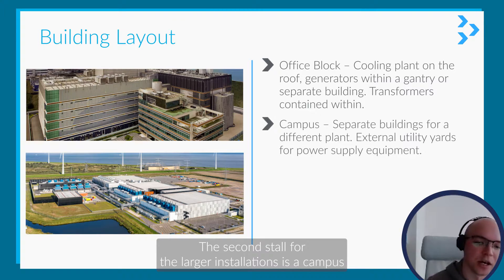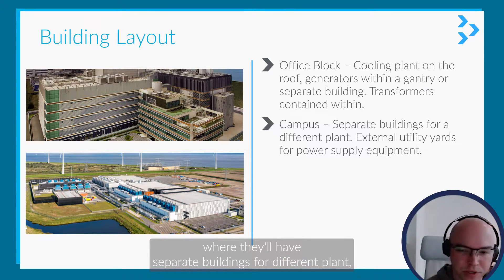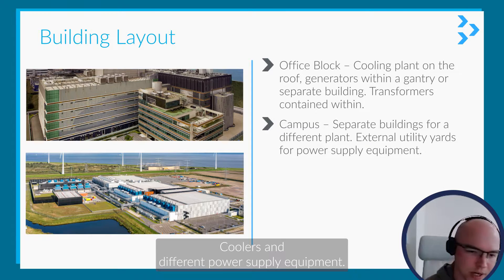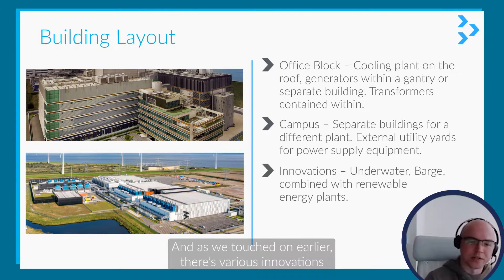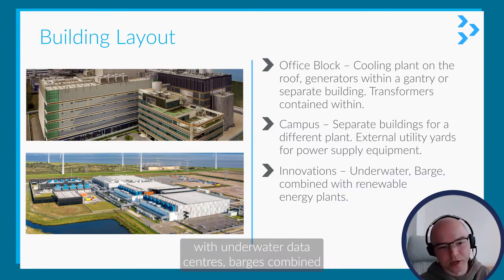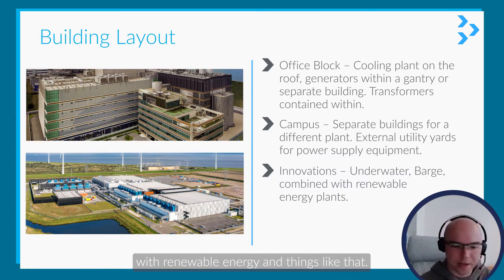The second style for larger installations is a campus, where they'll have separate buildings for different plant — external utility yards for generators, transformers, coolers, and different power supply equipment. And as we touched on earlier, there are various innovations such as underwater data centers, barges combined with renewable energy, and things like that.